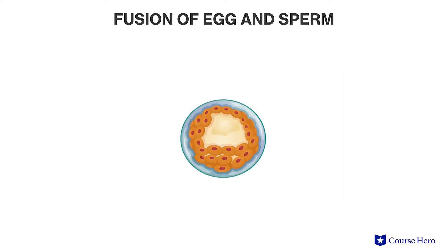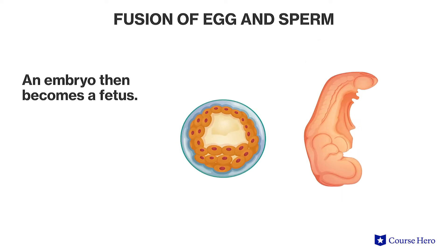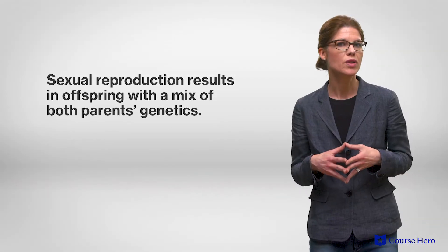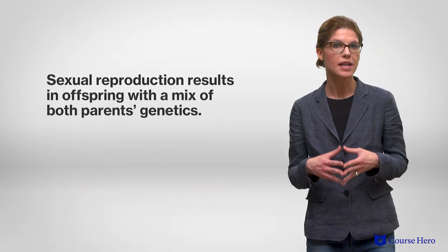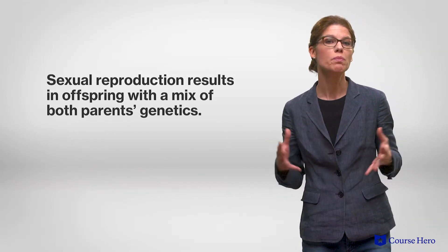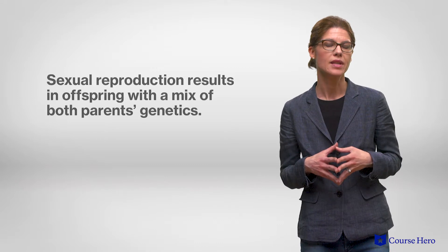This zygote eventually becomes an embryo once it has undergone several rounds of cell division and development. In mammals, when the embryo has developed further, it is called a fetus. Sexual reproduction results in offspring with a mix of genetic information from the two parents, which is an advantage in an ever-changing environment as it increases the chances that at least some offspring will survive and reproduce.